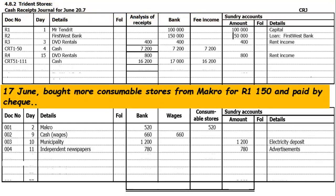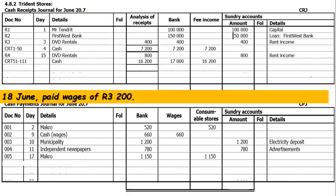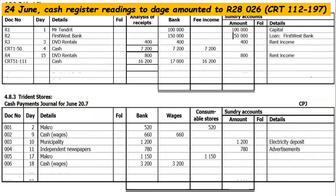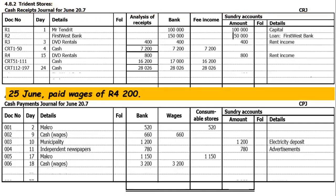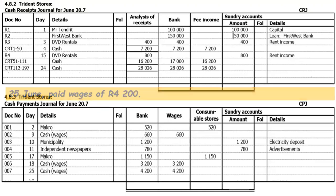On the 17th of June, bought more consumable stores from Macro for 1,150 rands and paid by check — CPJ entry recorded. On the 18th of June, paid wages of 3,200 rands — CPJ entry. On the 24th of June, cash register readings to date amounted to 28,026 rands — Cash Receipt Journal entry: CRT 1, source document on the 24th, details cash, falls under fee income.